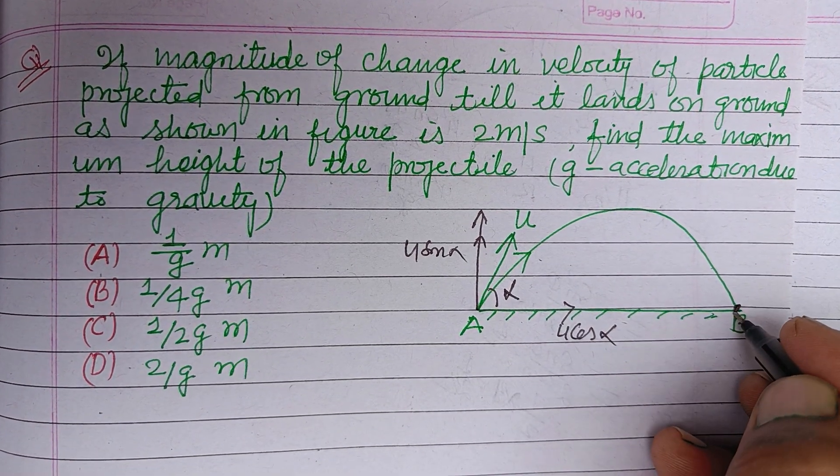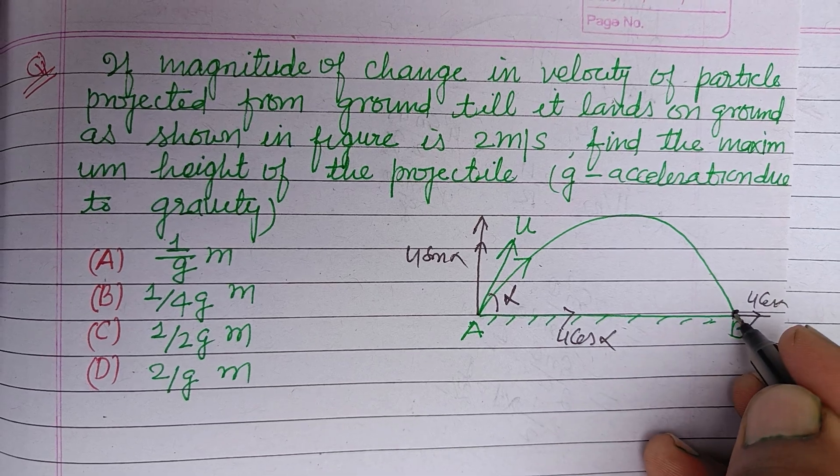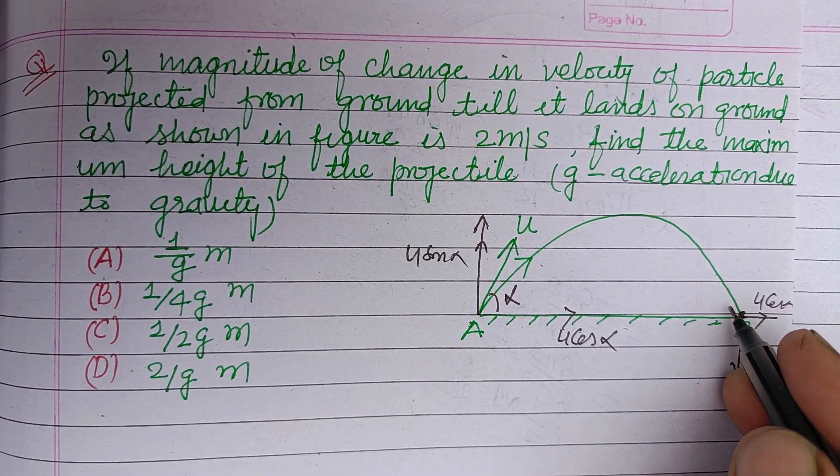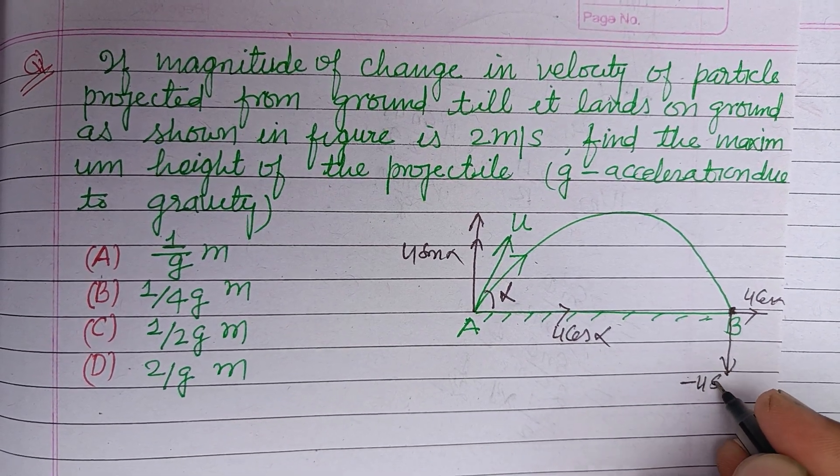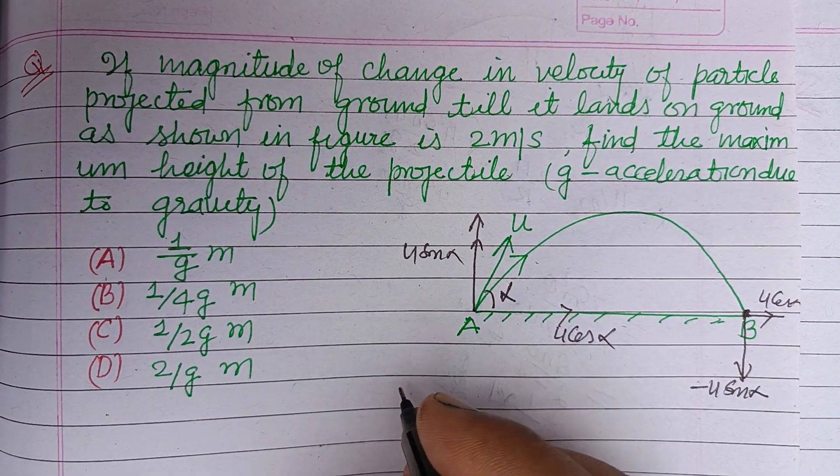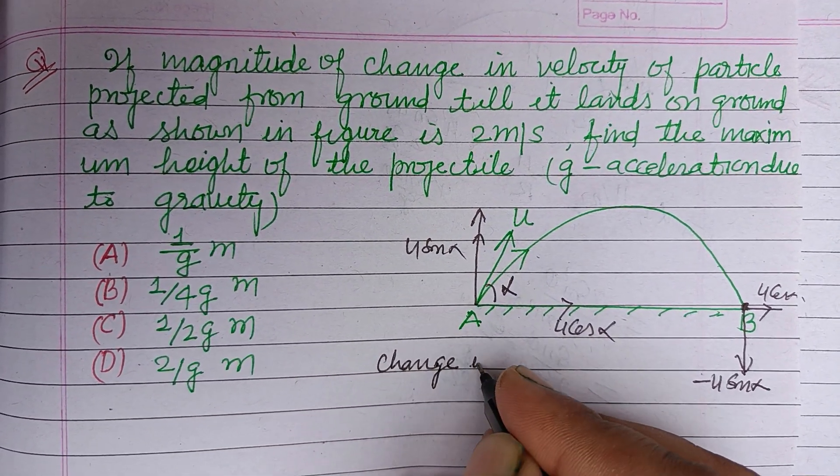At the point of landing, here it is u cos alpha. The direction of vertical is in opposite direction, so this is u sine alpha. So change in velocity...